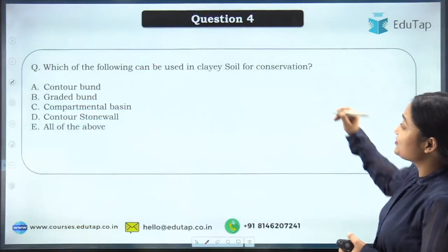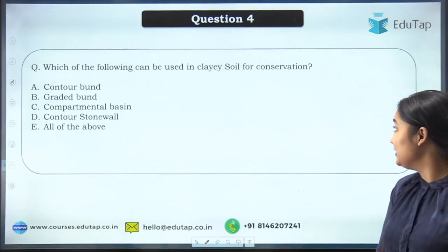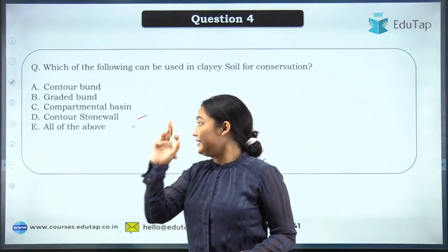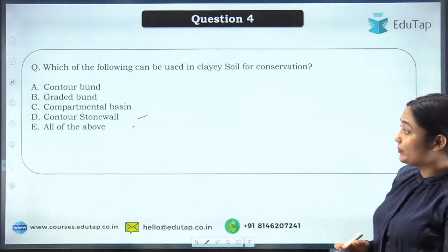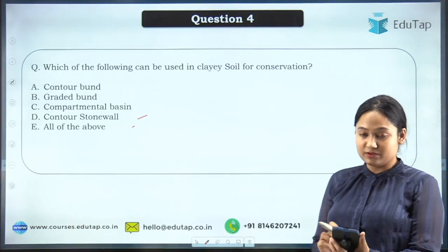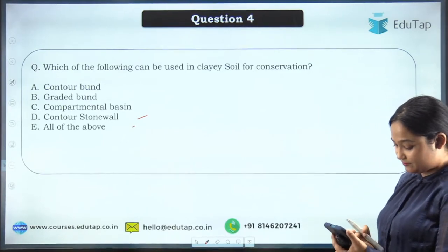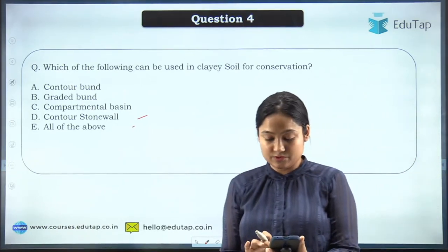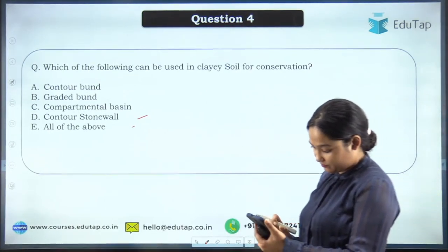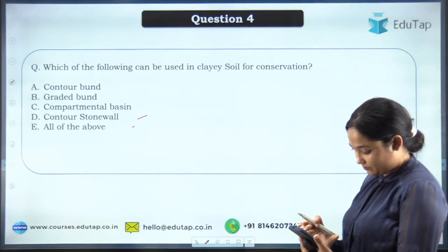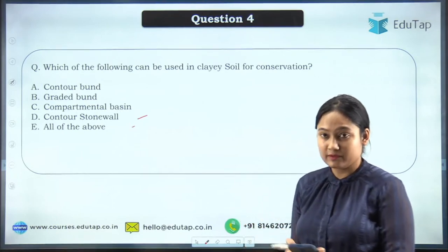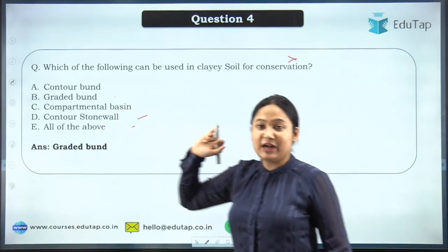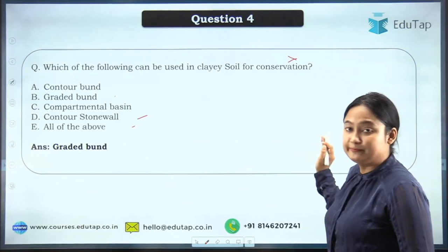The next question asks which conservation measure can be used in clayey soil. The options are contour bund, graded bund, compartmental bund, contour stone wall, and all of the above. The correct answer is graded bund — not all of the above.